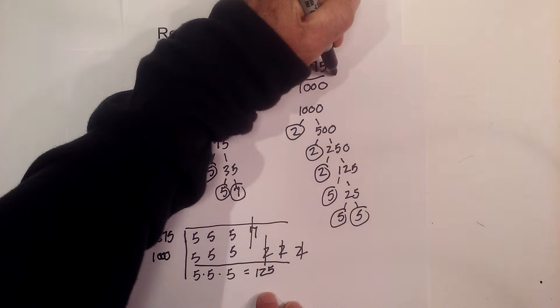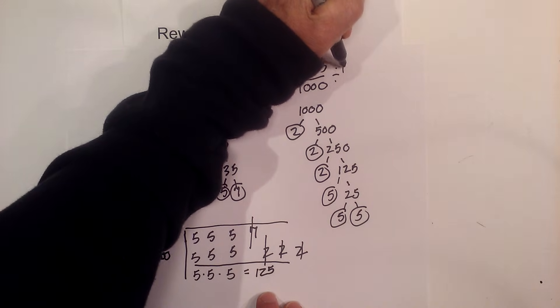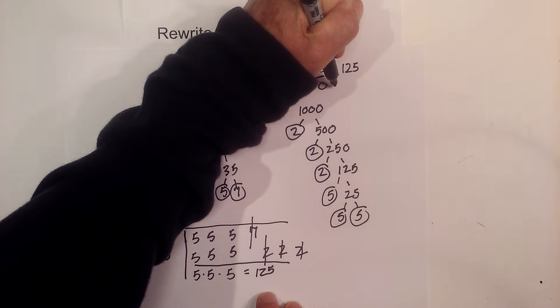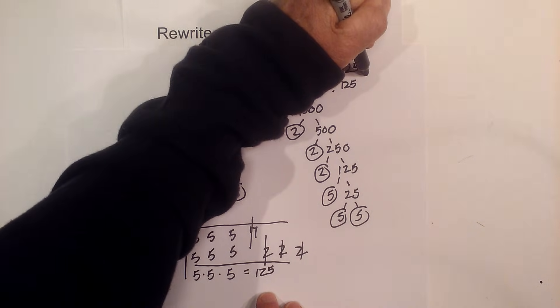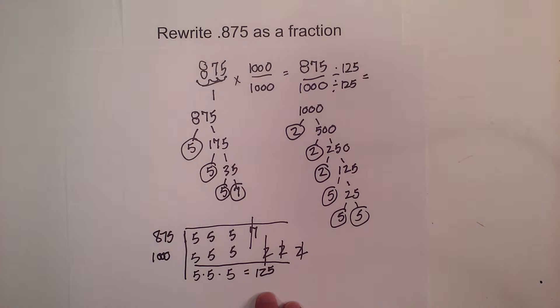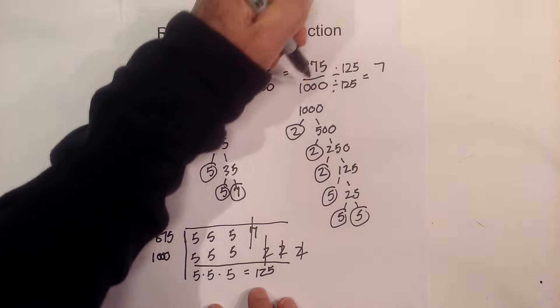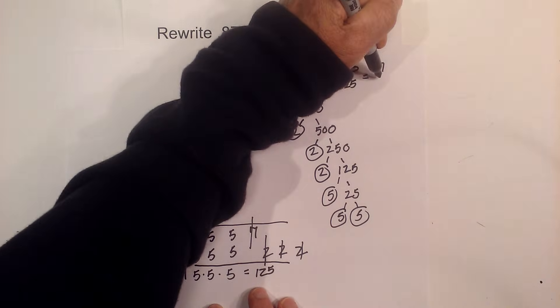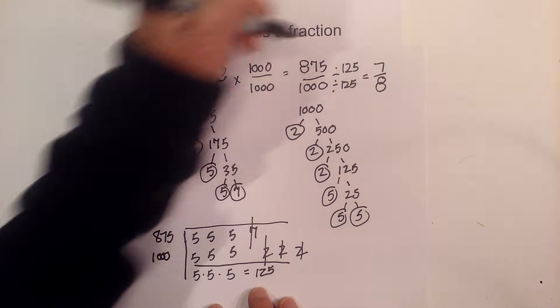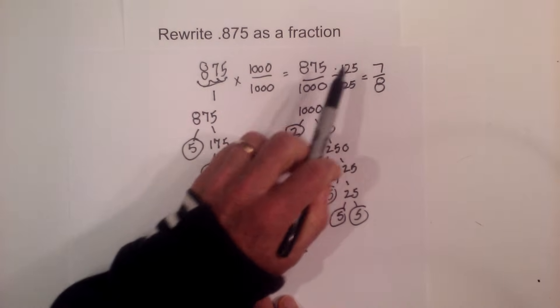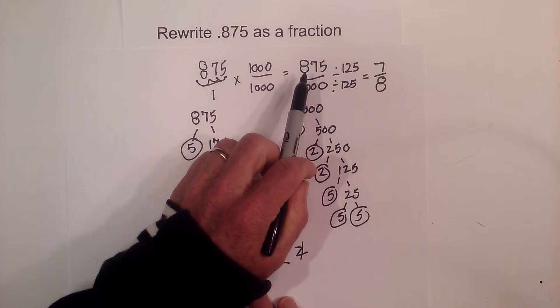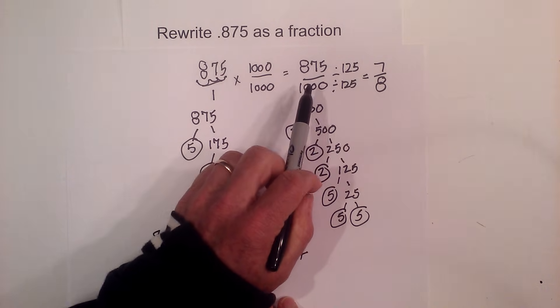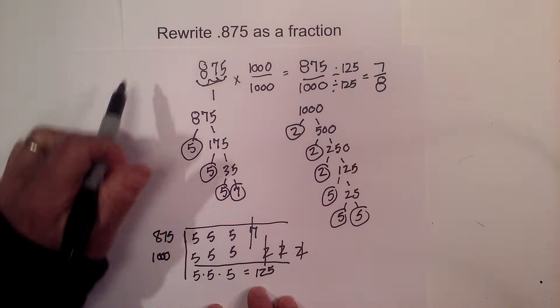Now I go back to my original fraction: 875 divided by 125 and 1,000 divided by 125. 875 divided by 125 equals 7, and 125 goes into 1,000 eight times. The nice thing is when you get to this point, you can just use a calculator and put 875 divided by 125 equals 7, and the same with this.